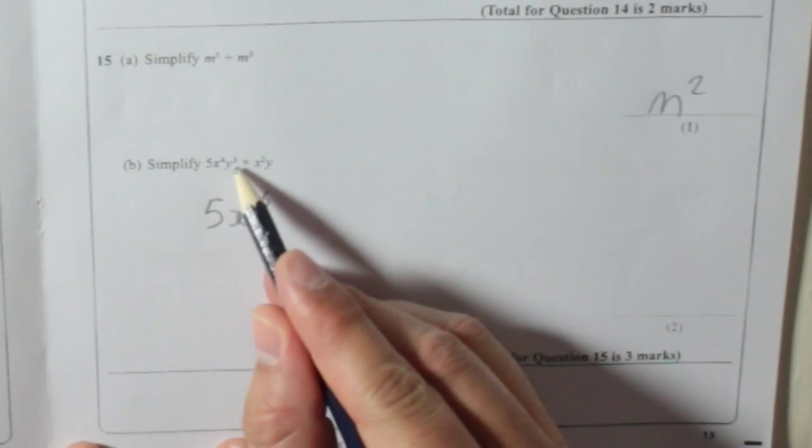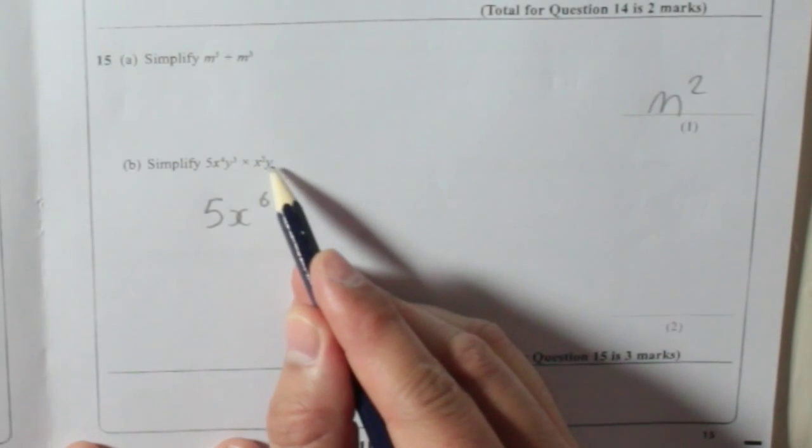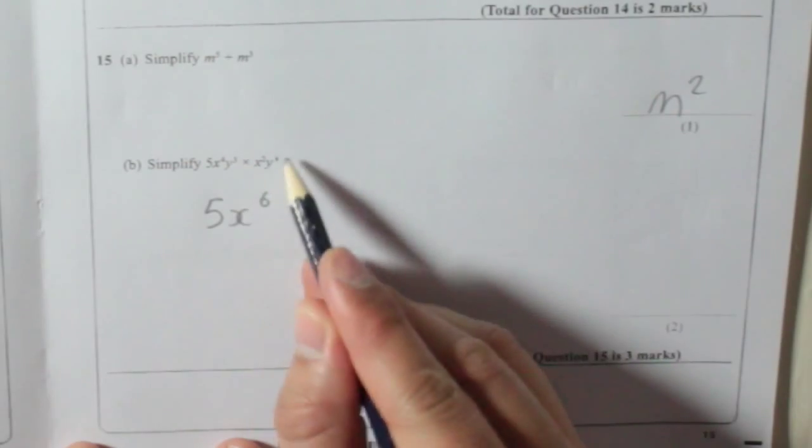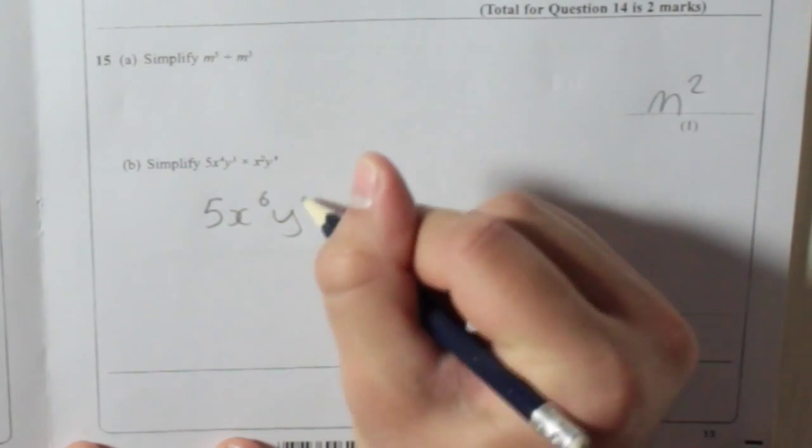And then you've got y to the power of 3 times, and it just says y, but remember that is secretly y to the power of 1, so it's 3 plus 1 is 4. So y to the power of 4.